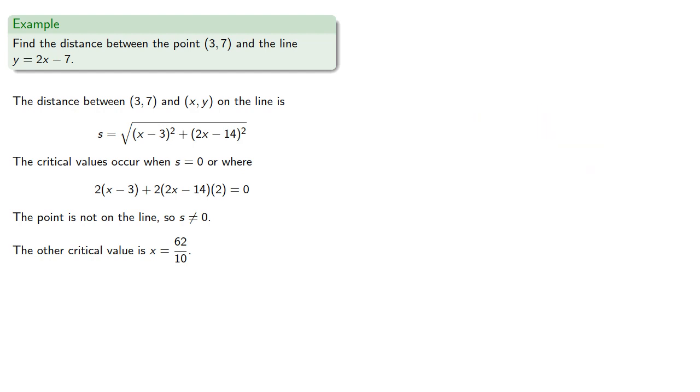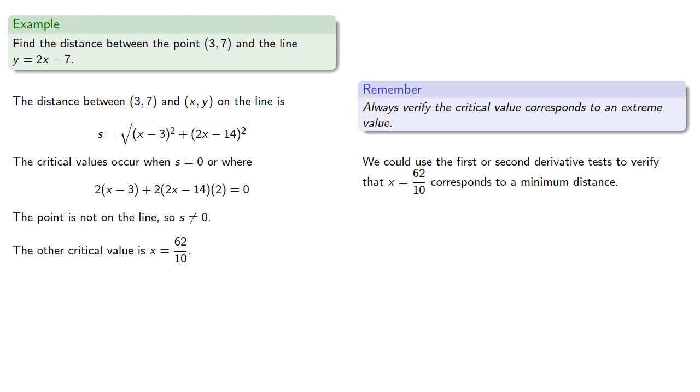Now remember, we should always verify the critical value corresponds to an extreme value. So we could use the first or second derivative test to verify that our solution x = 62/10 corresponds to a minimum distance. But from geometry, we know that there will be no maximum distance between a point and the line. So this critical value must correspond to a minimum.